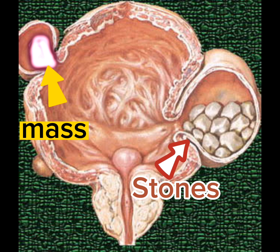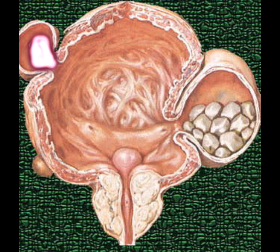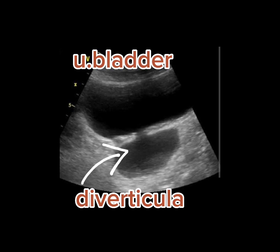Here we can see a summary of two main complications: multiple stones in the diverticula, and evidence of growth in the diverticula. This is an example of ultrasound where we can see the urinary bladder with a single diverticula and a small opening communicating the diverticula with the bladder.